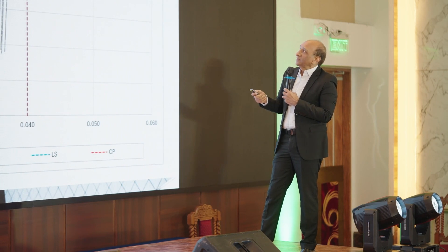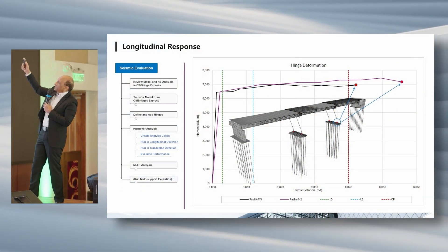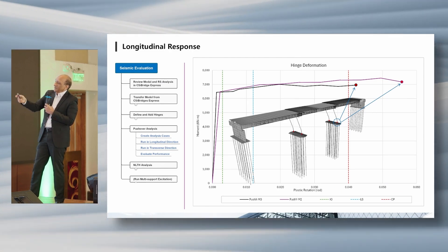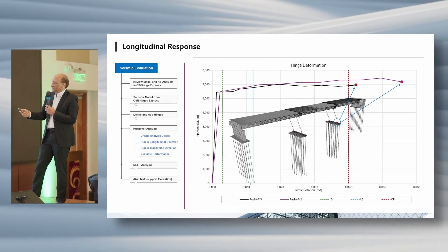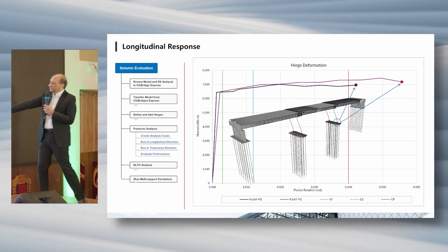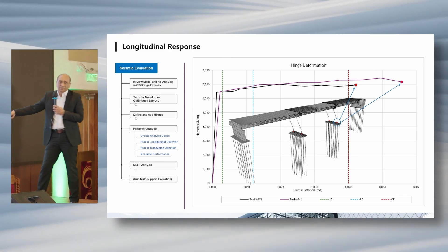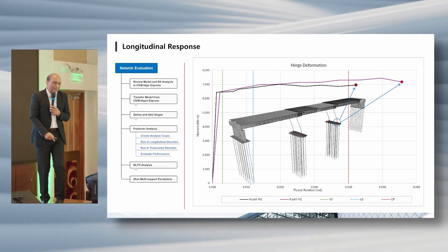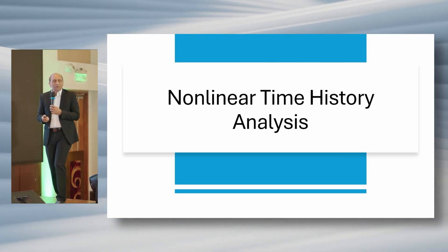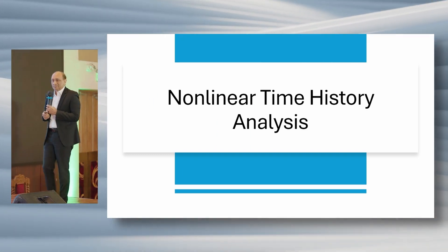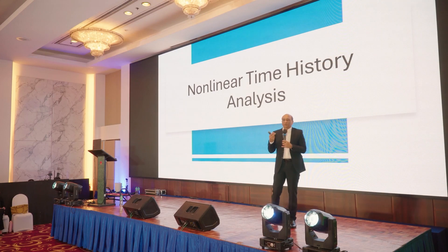We can see the hinge deformations in each case along with deformation-controlled limits. These limits — immediate occupancy and life safety — are basically taken from buildings, and similar limits can be applied for bridges. Now let's move to the next part: non-linear time history analysis.